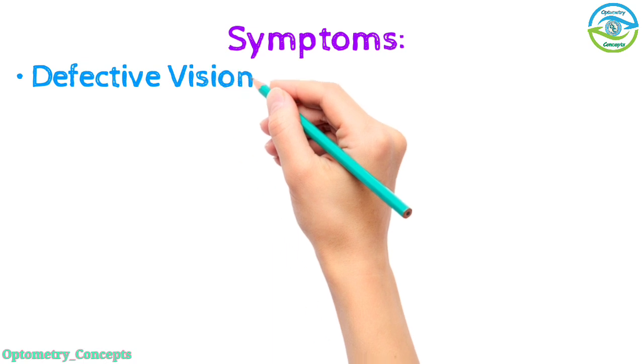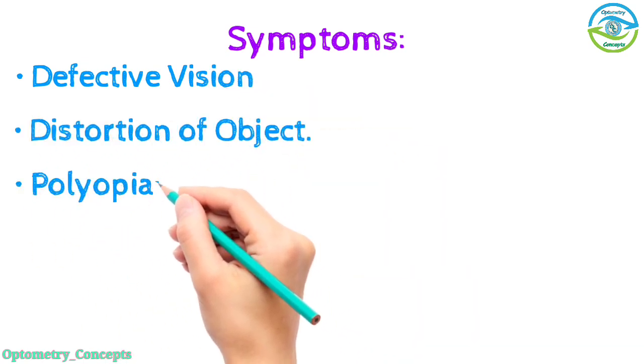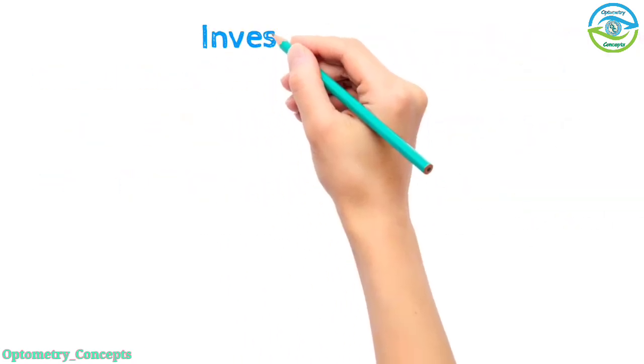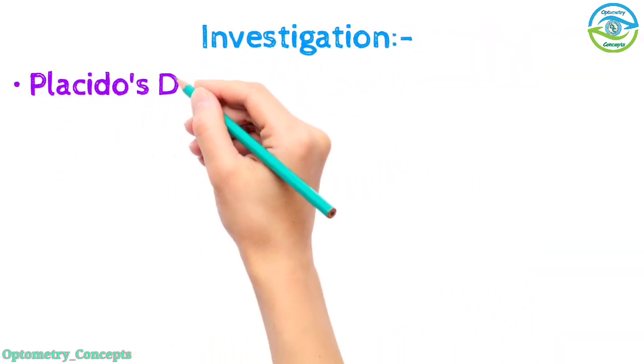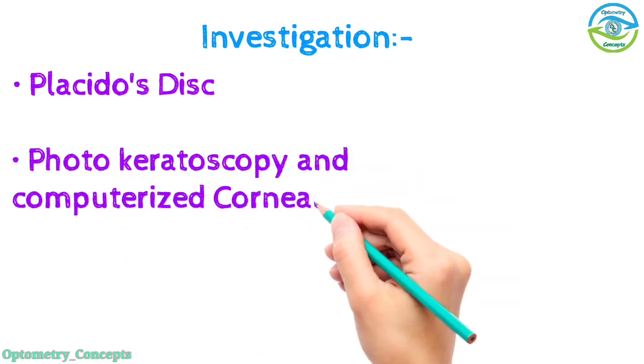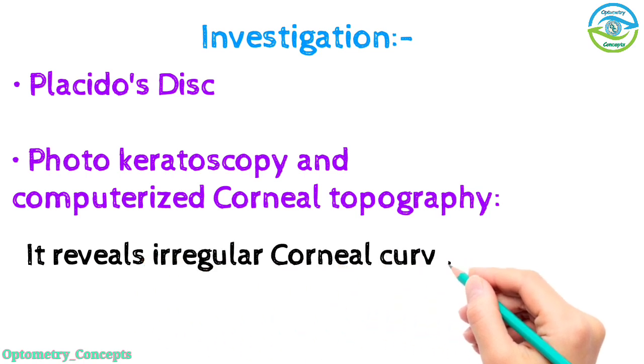Symptoms: defective vision, distortion of object, polyopia (visual perception of multiple images). Investigation: Placido's disc, photokeratoscopy and computerized corneal topography - it reveals irregular corneal curvature.